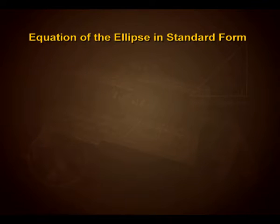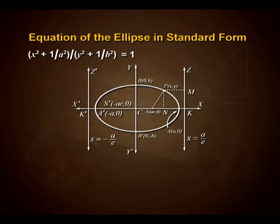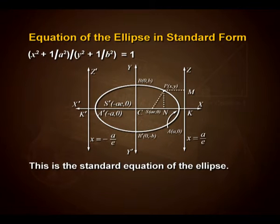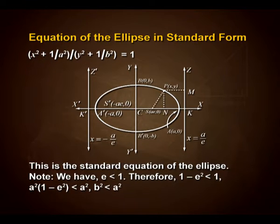Now we shall discuss the equation of the ellipse in standard form: x²/a² + y²/b² = 1. This is the standard equation of the ellipse. Note that e < 1, therefore 1 − e² < 1, and a²(1 − e²) < a², so b² is always less than a².